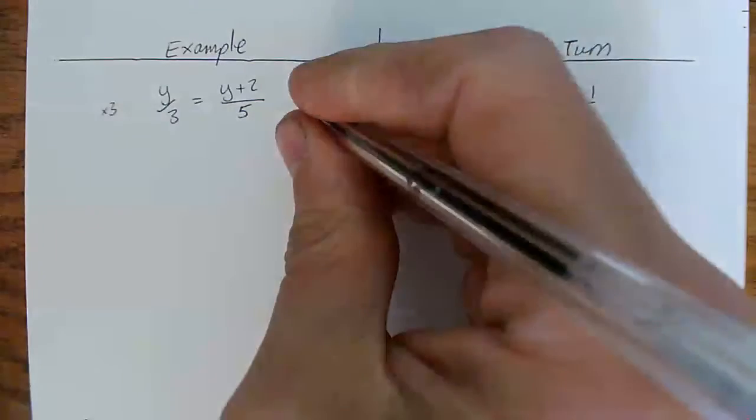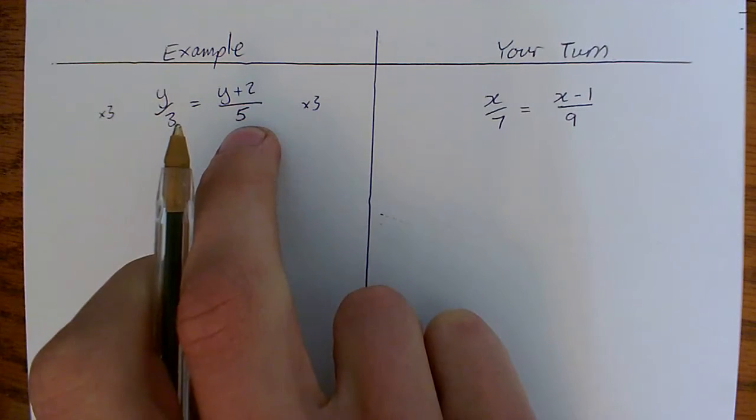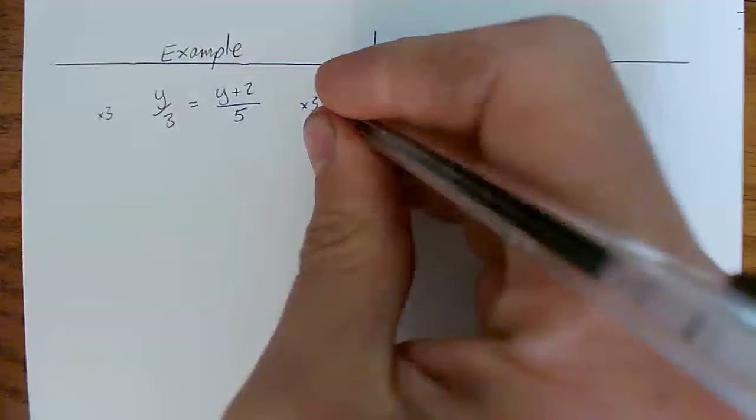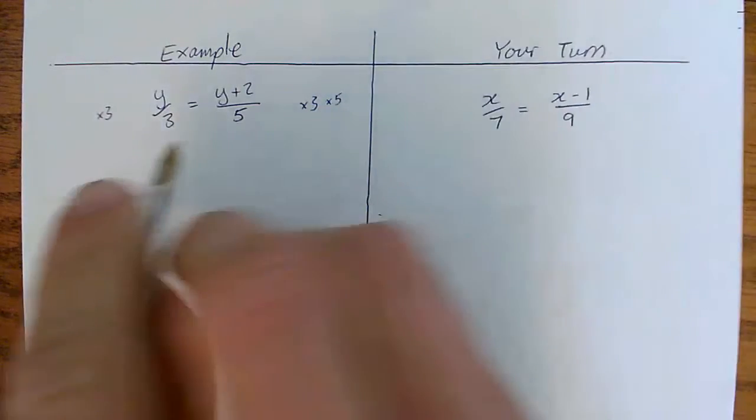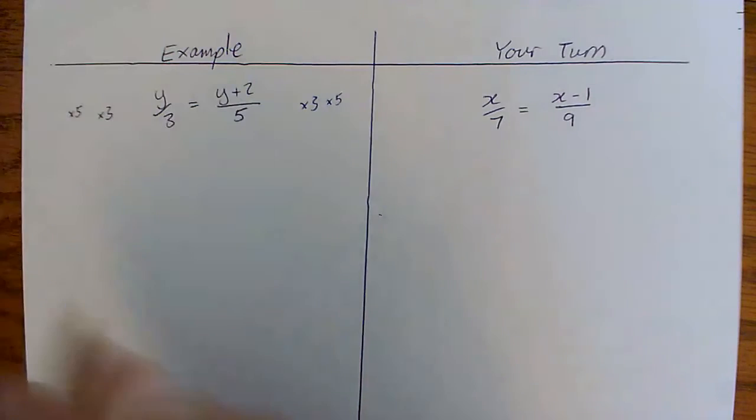But I need to do the same to that side. If I times this side here by 5, that will disappear. And if I times this side here by the 5, I've just got to do the same to that side.